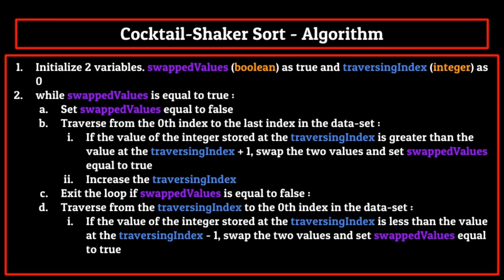If it is, we swap the two values and set swapped values equal to true. If not, we do nothing. Then, finally, for step ii, we decrease the traversing index by 1. This is the opposite of step ii from the first traversing loop, because we now have to go back down the list instead of up it.